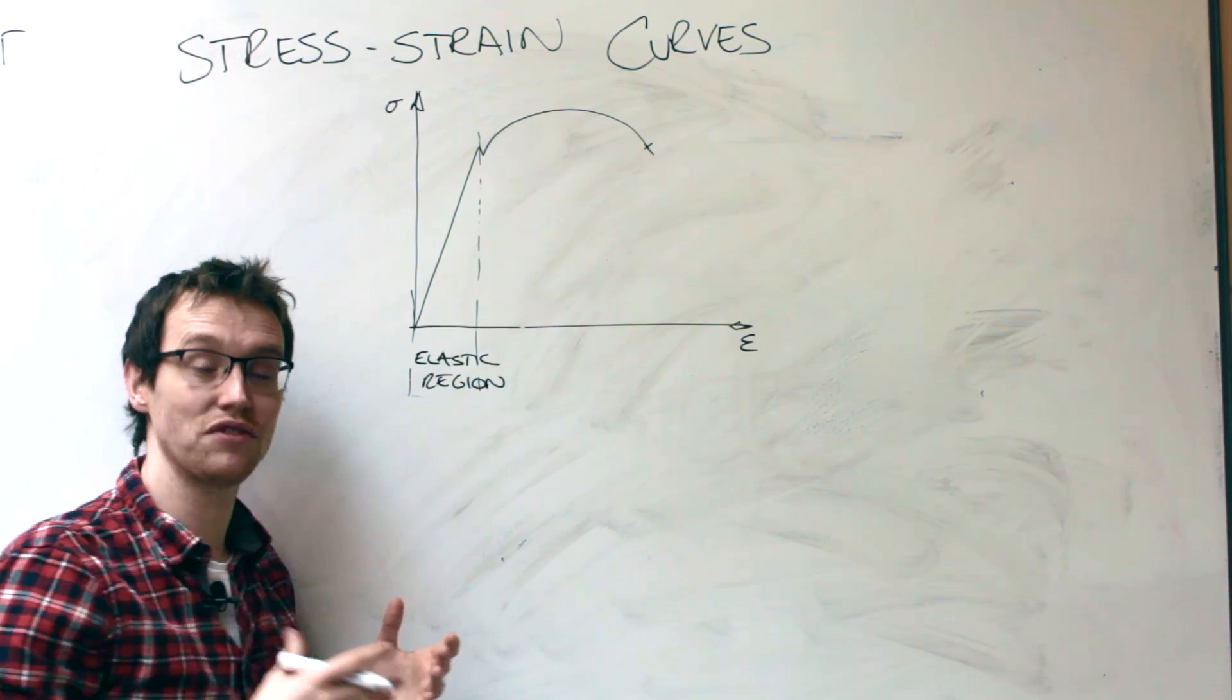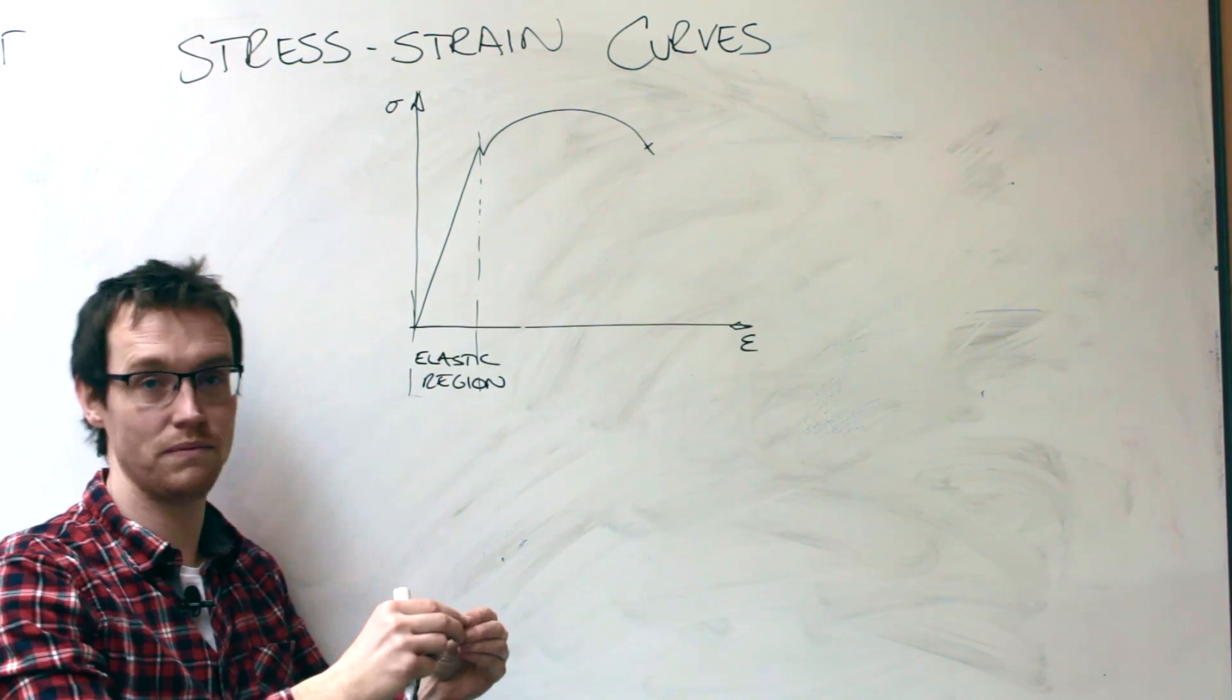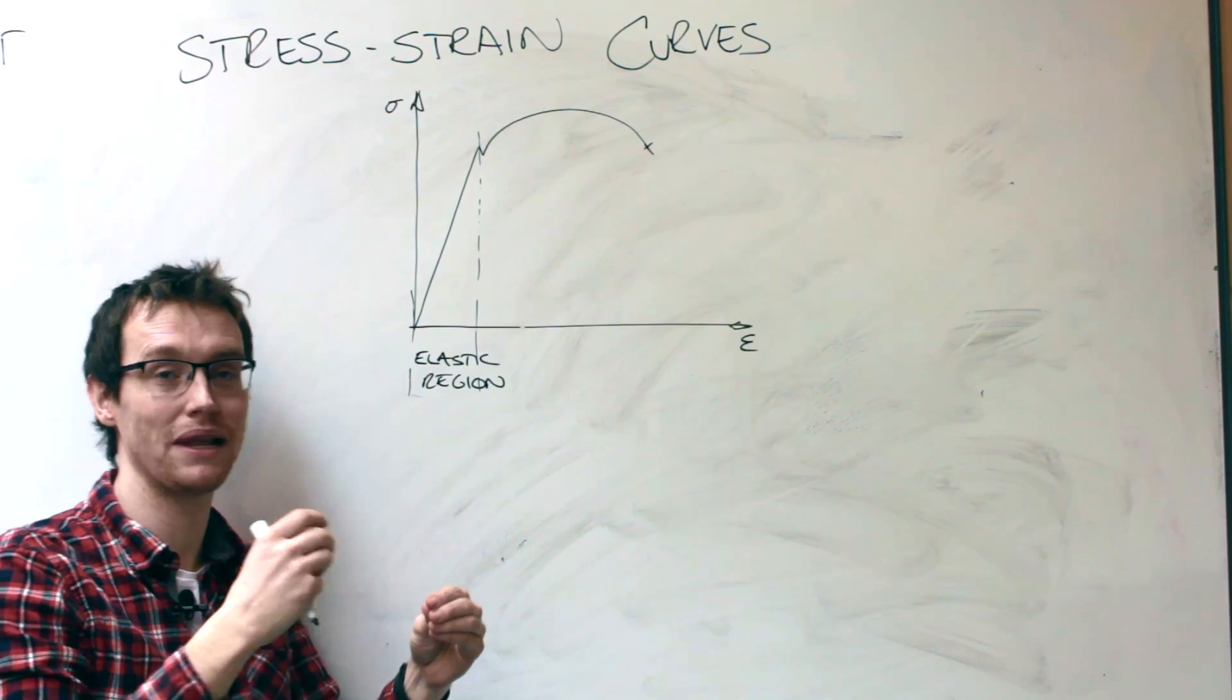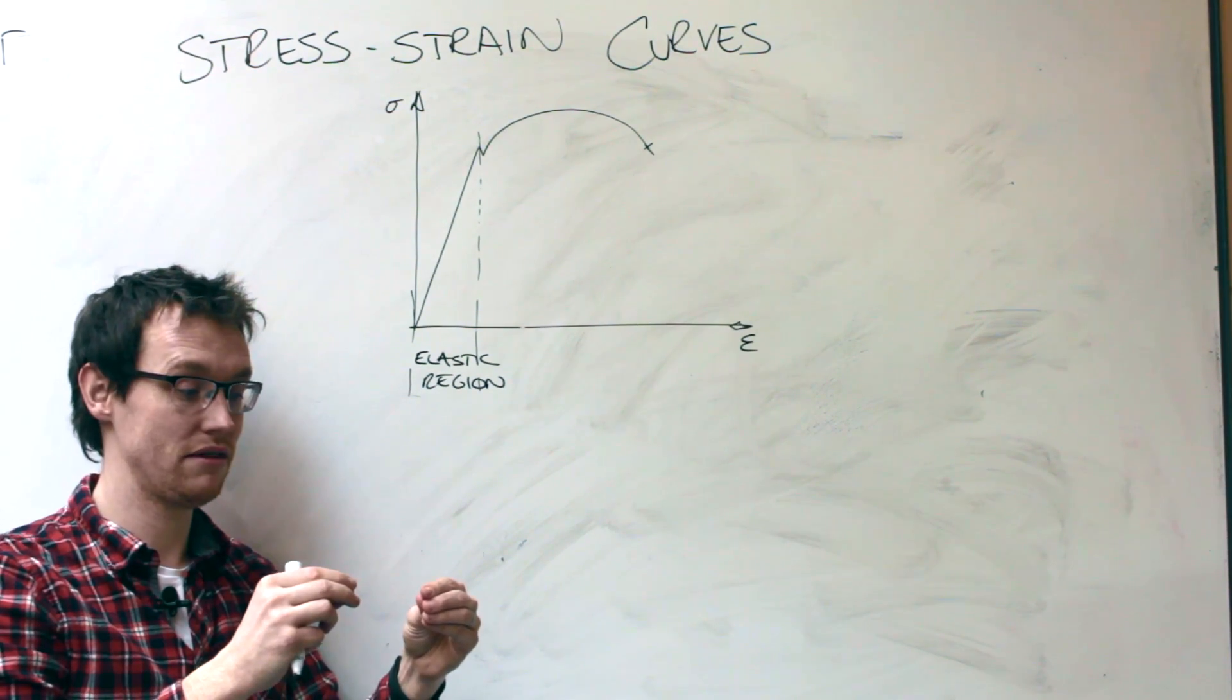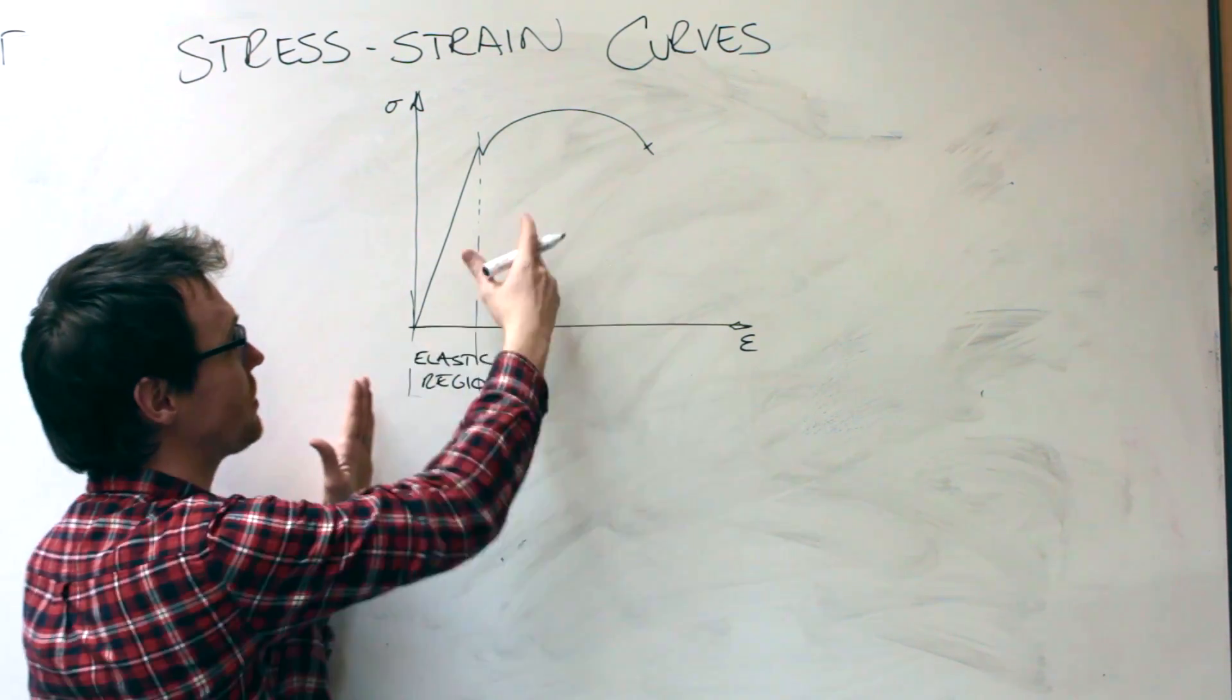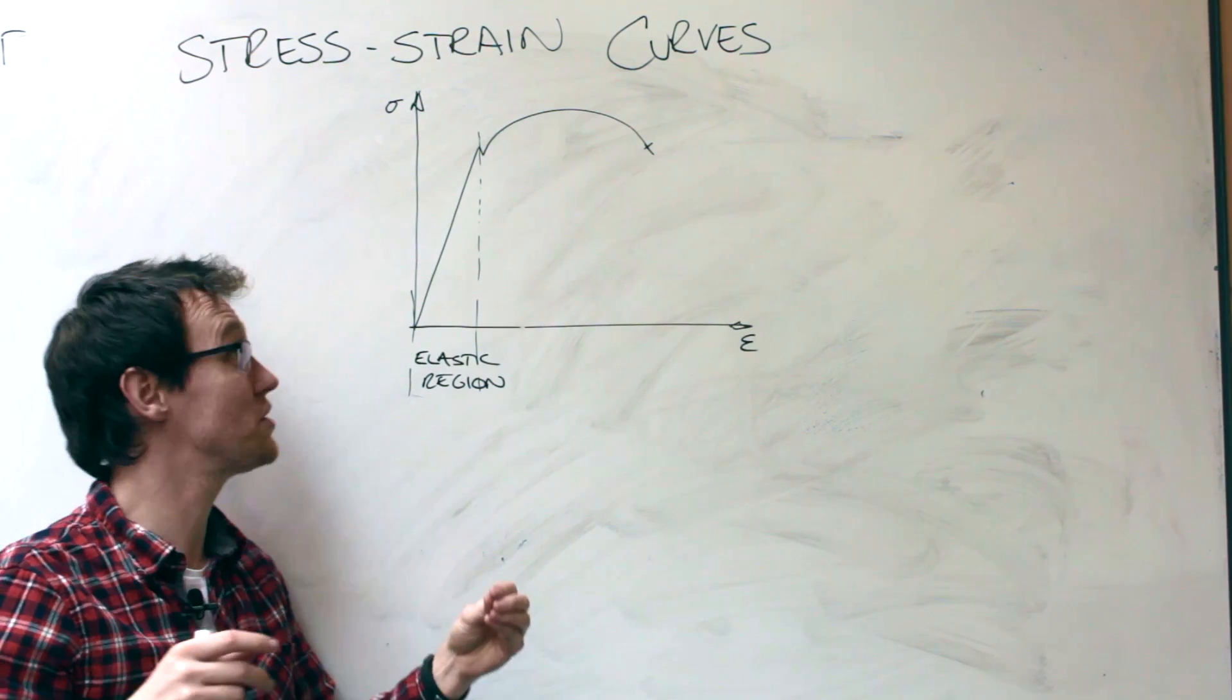So this bit here is the elastic region. And the definition of something being elastic is that when you stretch it exactly 10 millimeters, you let go, it'll go back to zero, not one. It hasn't deformed plastically, which means if you stretch it 10 millimeters, it might go back to one millimeter. So it's had a permanent deformation. In the elastic region, you stretch it and it goes exactly back to its starting position.